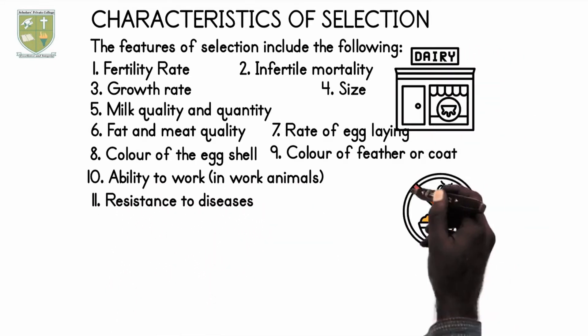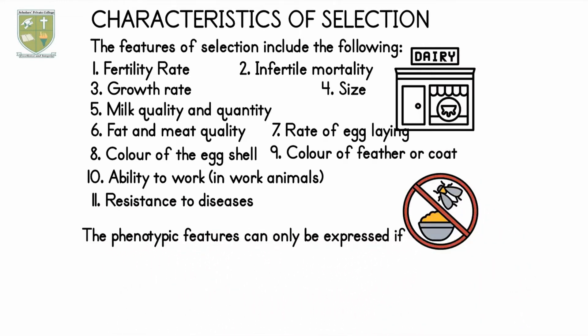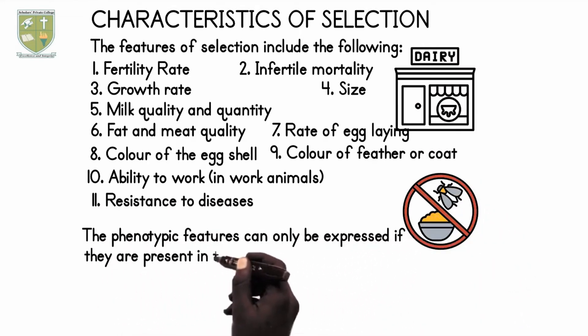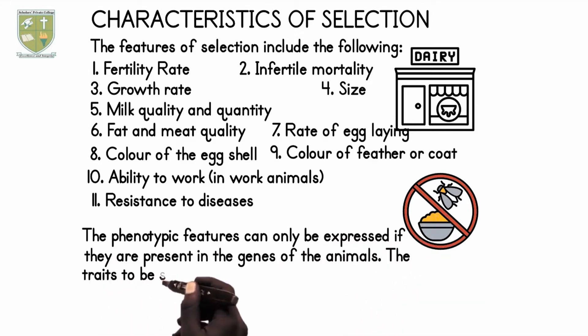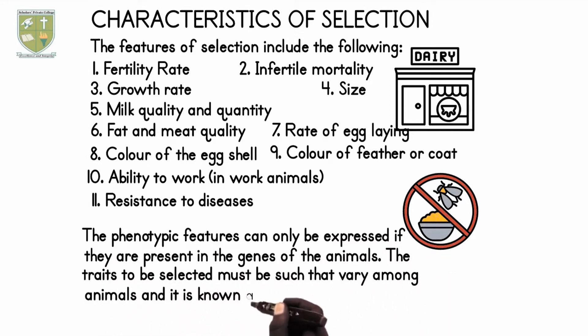9. Color of feather or coat, 10. Ability to work in work animals, 11. Resistance to diseases. The phenotypic features can only be expressed if they are present in the genes of the animals. The traits to be selected must be such that vary among animals, and this is known as heritability.